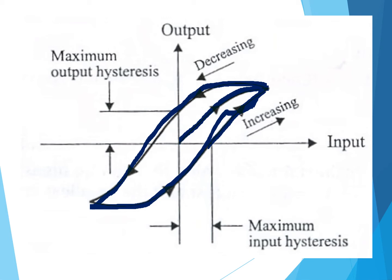When x is 0 and y has some value on the descending curve, that gives the maximum output hysteresis. When the output y-axis is 0 and there is some input value on the scale, the difference gives the maximum input hysteresis.